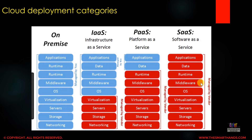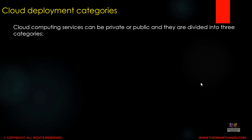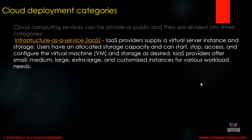This gives a better understanding of the differences between IaaS, PaaS, and SaaS. For IaaS — Infrastructure as a Service — the provider supplies a virtual server instance and storage. Users have an allocated storage capacity and can start, stop, access, and configure the virtual machine and storage as desired. IaaS providers offer small, medium, large, extra-large, and customized instances for various workload needs.